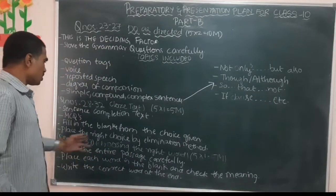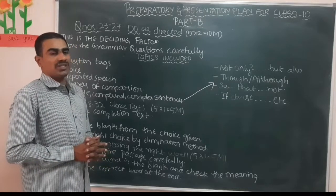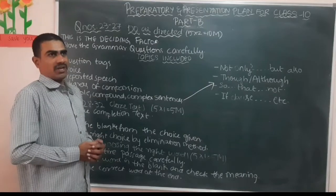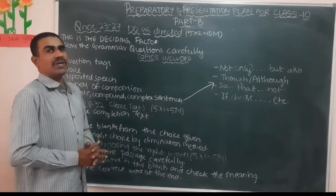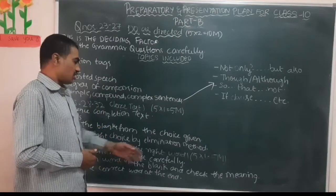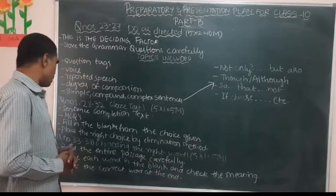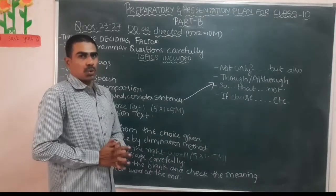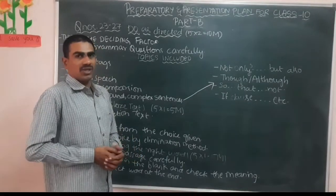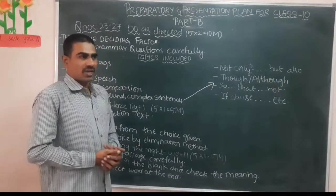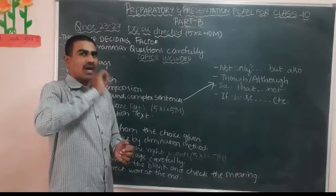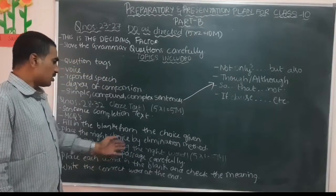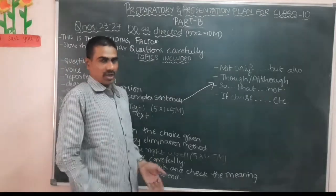The next part is choosing the right word from the choices given, sections 33 to 37, also five marks. Two words are given in brackets and you have to choose between them. Read the entire passage carefully before writing answers — go through the entire passage, start placing each word in the blank, and then check the meaning of it.